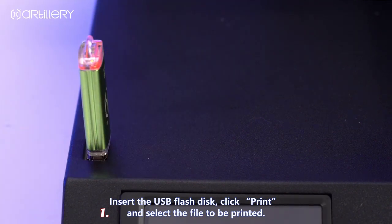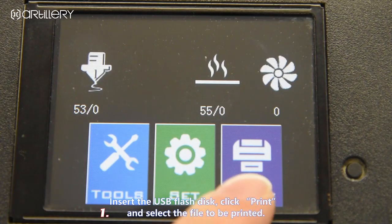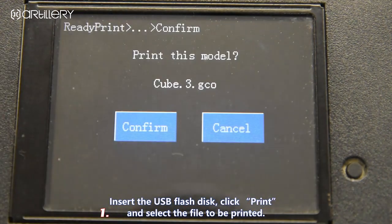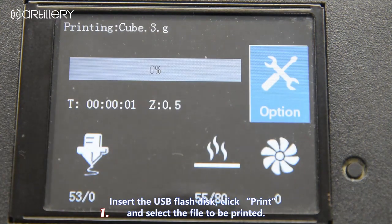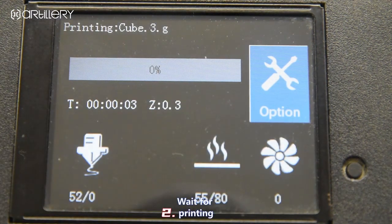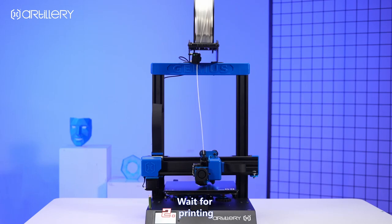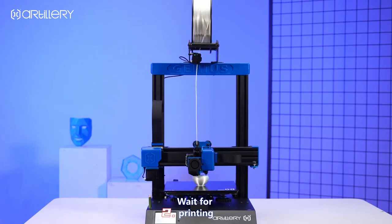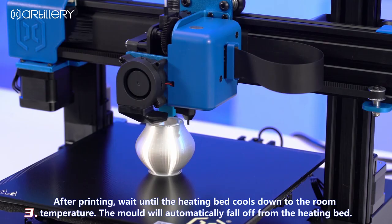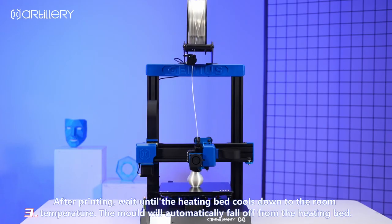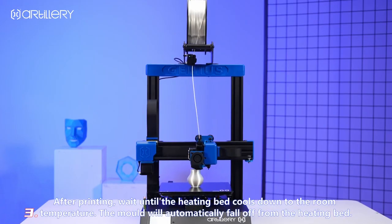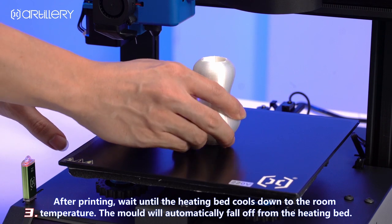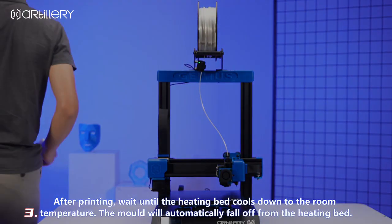Insert the USB flash disk, click Print, and select the file to be printed. Wait for printing. After printing, wait until the heating bed cools down to room temperature. The model will automatically fall off from the heating bed.